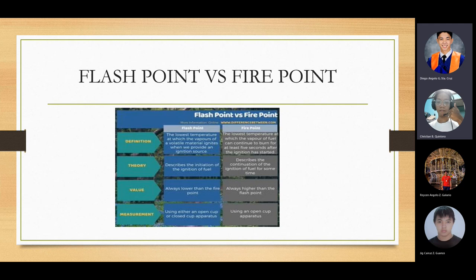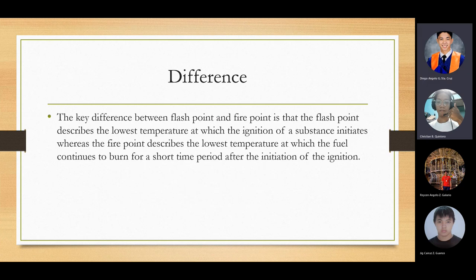The difference between flashpoint and fire point in theory: flashpoint describes the ignition of fuel, while fire point describes the ignition of fuel for some time continuously. The key difference is that flashpoint describes the lowest temperature at which ignition of the substance initiates, whereas fire point describes the lowest temperature at which the fuel will continue to burn for a short period of time after initiation of ignition. Fire point is about continuous ignition.